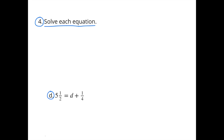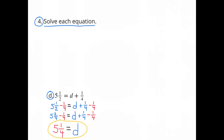D. 5 and 1/2 = D + 1/4. To get D by itself, subtract 1/4 from both sides: 5½ − ¼ = D + ¼ − ¼. Converting, 5½ = 5 and 2/4, so 5 and 2/4 minus 1/4 equals 5 and 1/4. Therefore D = 5 and 1/4.